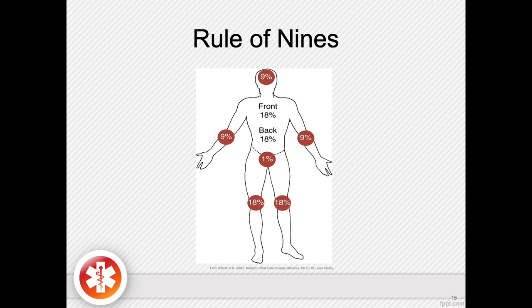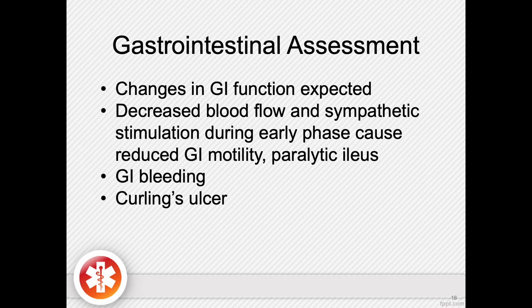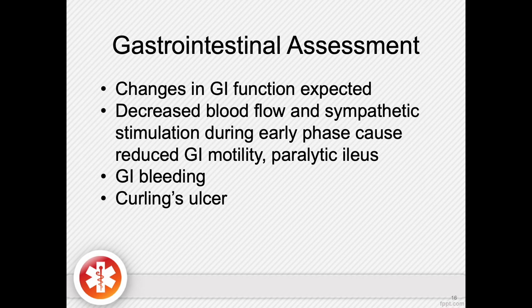For instance, if a patient had most of the front of their chest and abdomen burned, we would rate that at 18% using the front designation on the chart. If this same patient also had the right extremity burned, we would add another 9% for a total of 27%. Therefore, a patient with the anterior chest and right arm burned would have a total body surface area burn of 27%.